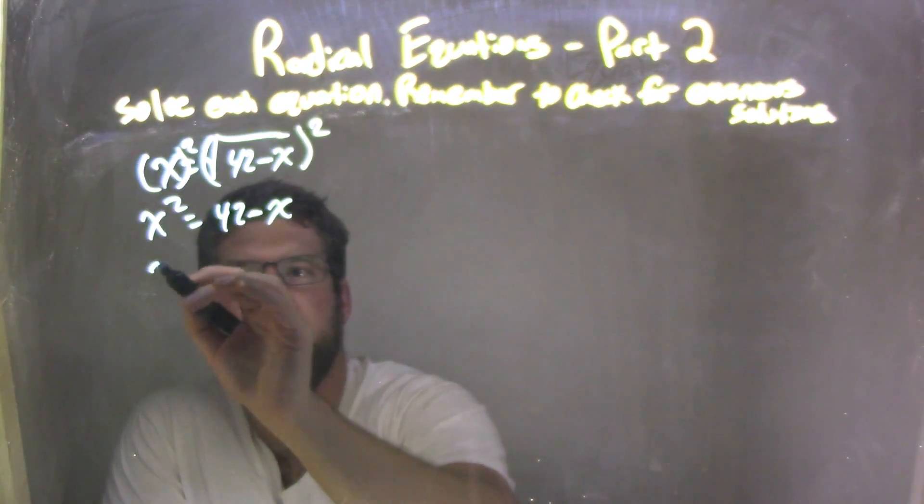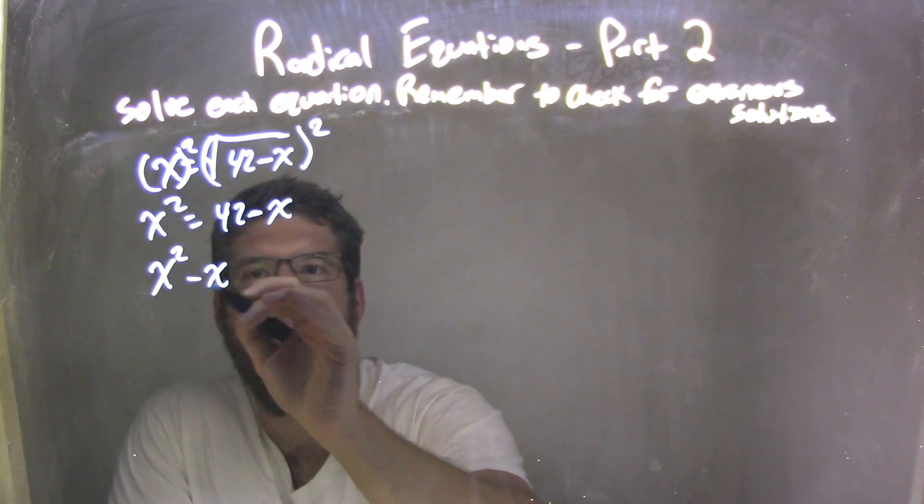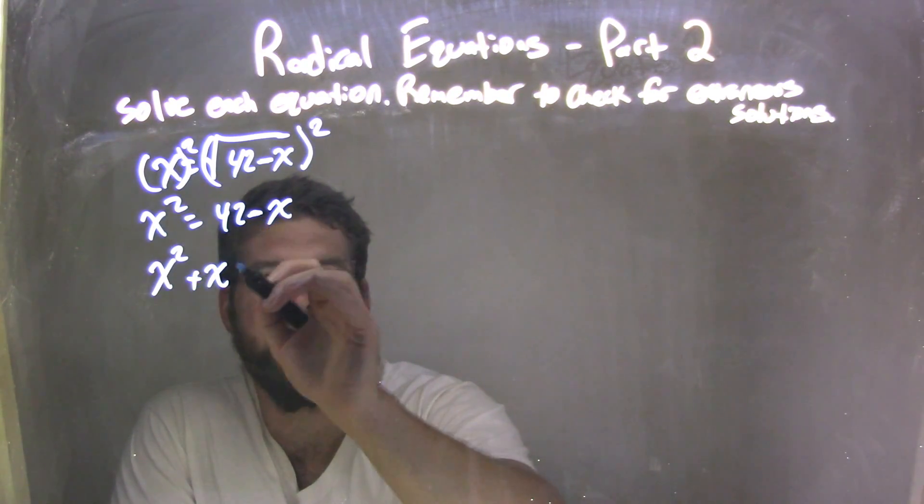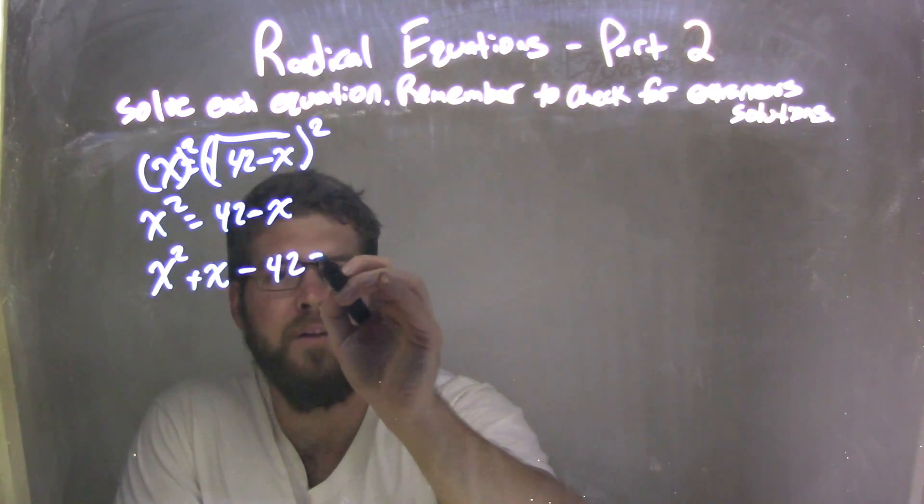Bringing everything over to the left-hand side: x squared plus x minus 42 equals 0.